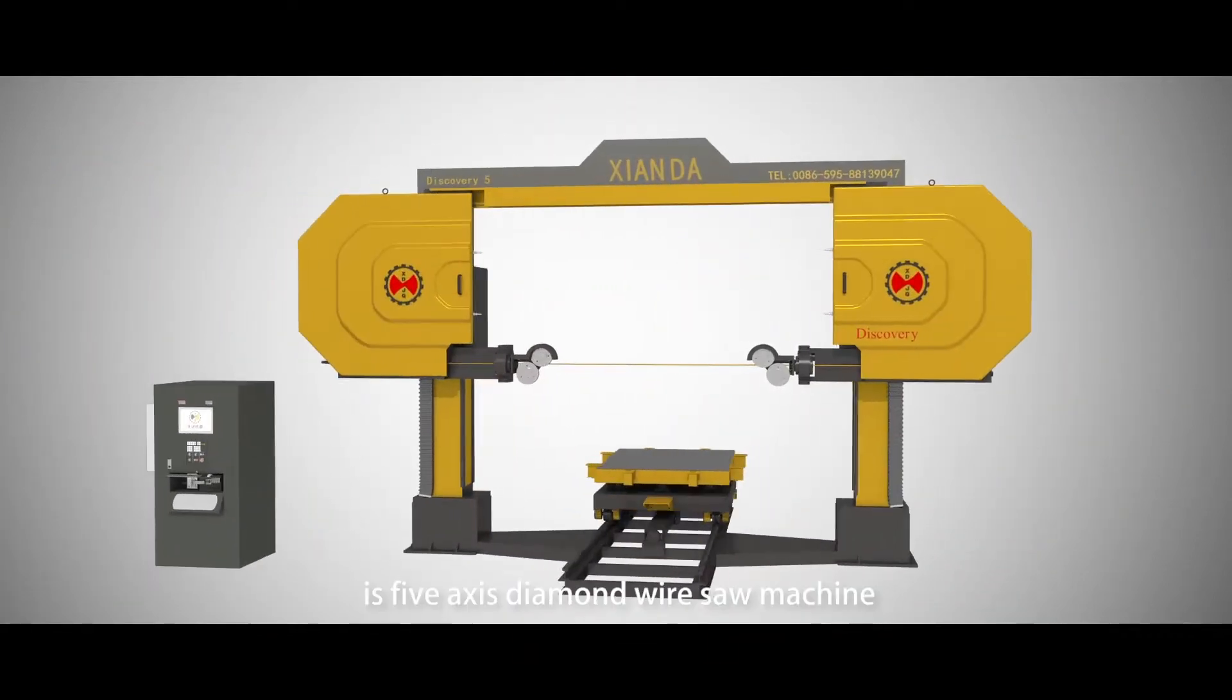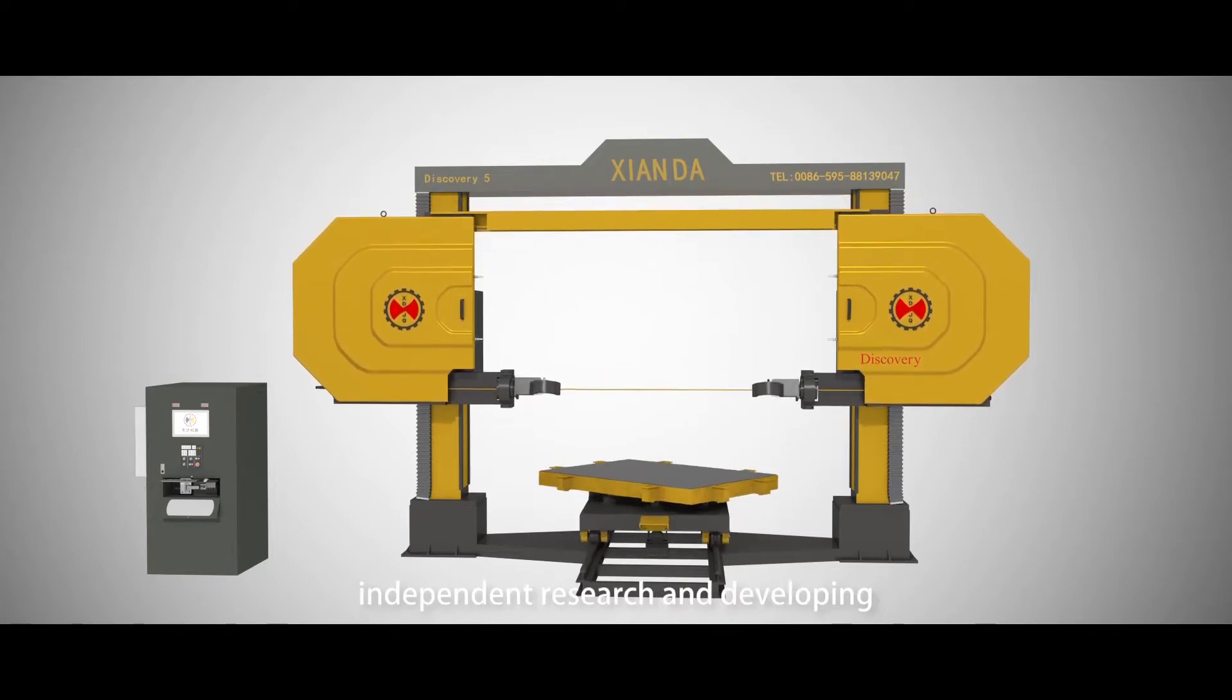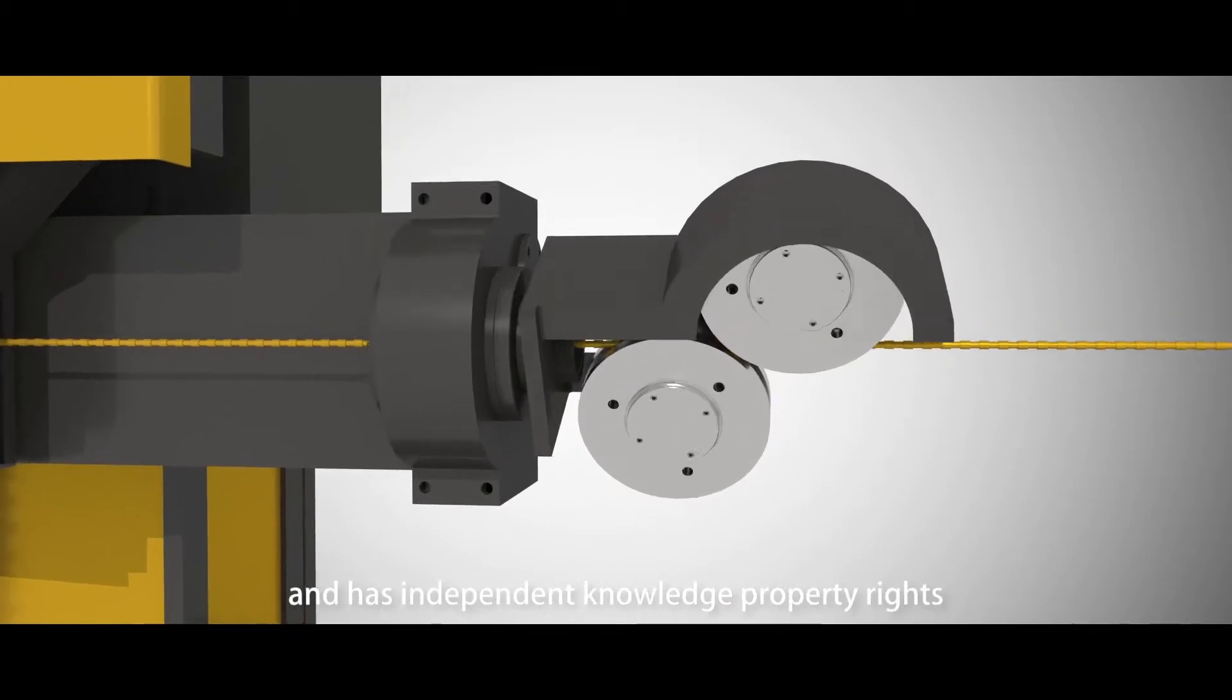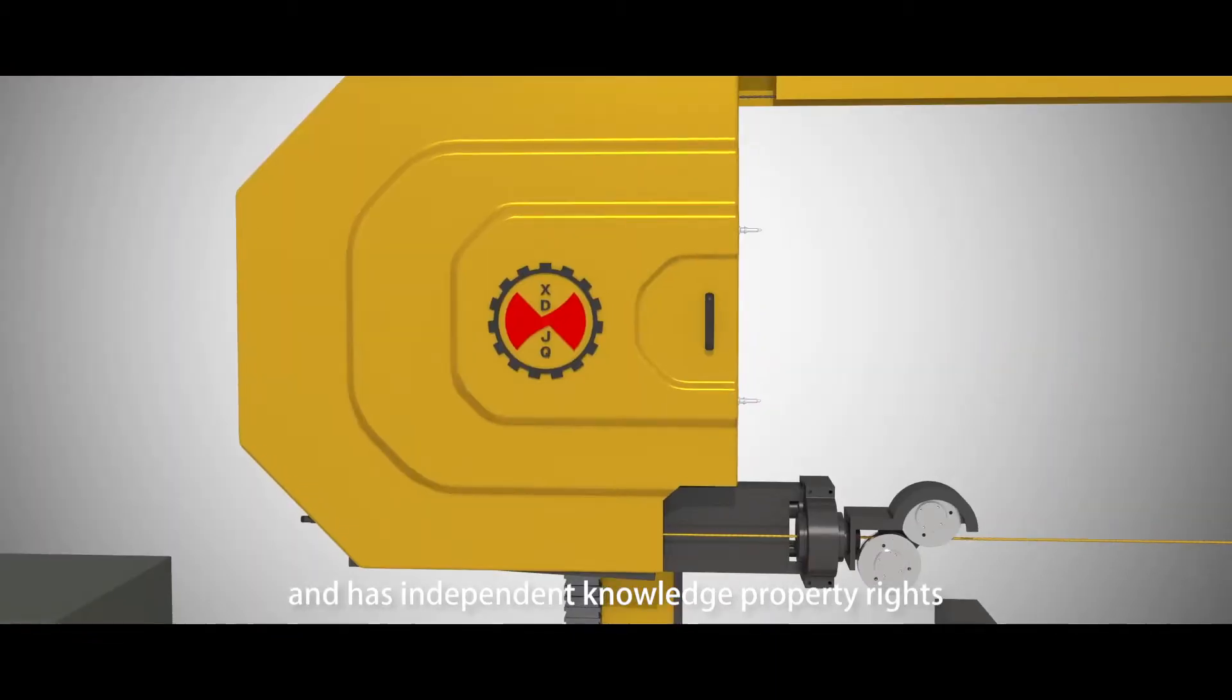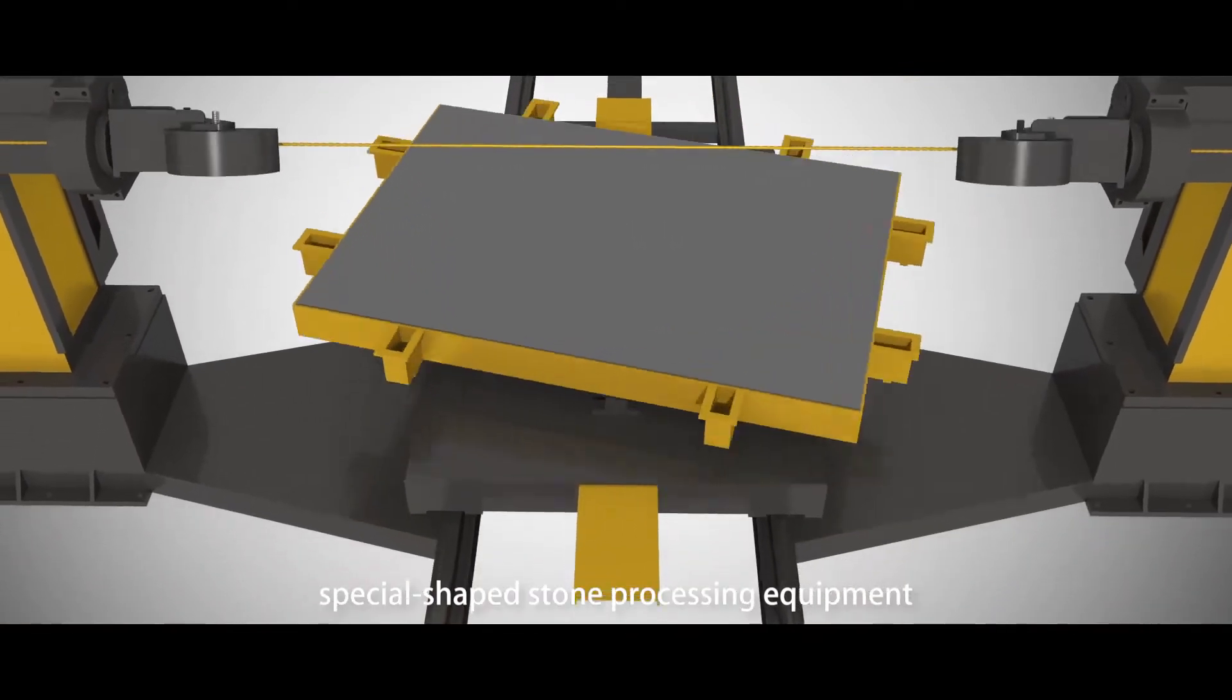Discovery 5 is a 5-axis diamond wire saw machine. Independently researched and developed by Fujian Shanda Machinery Company Limited, it has independent knowledge property rights. It's an epoch-making special shaped stone processing equipment.